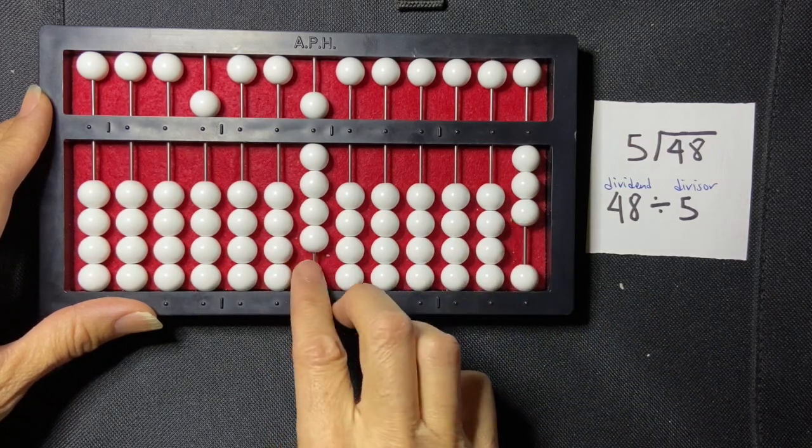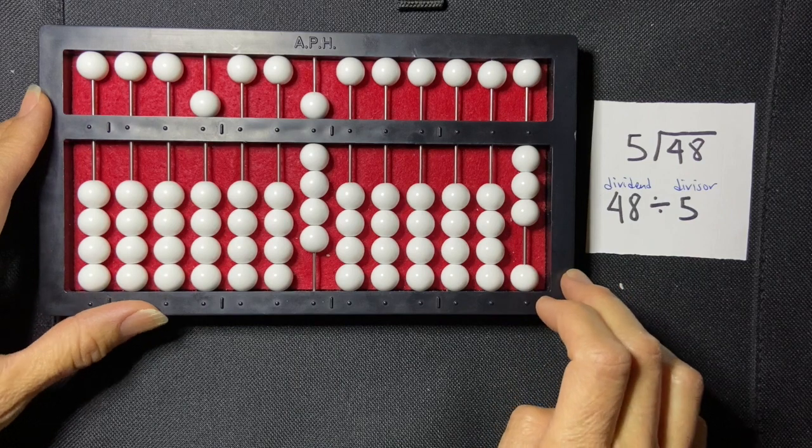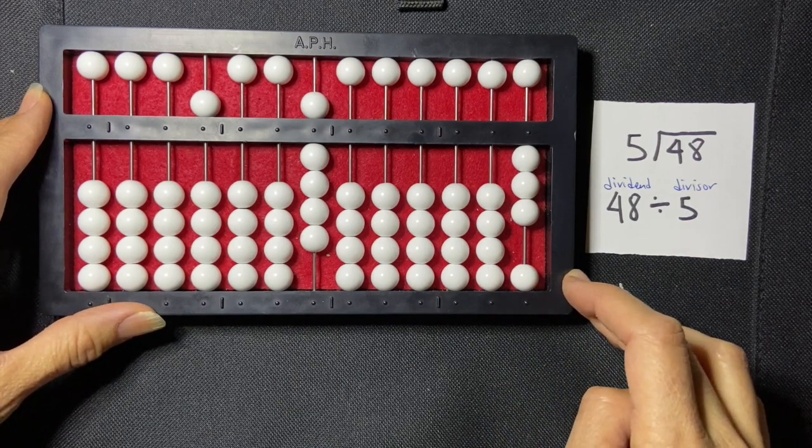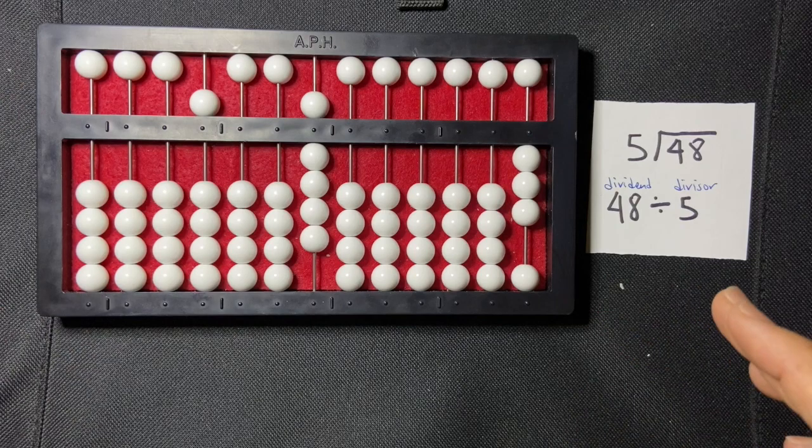And so my quotient is 9 remainder 3. And that's the indirect method, and that is a division problem.